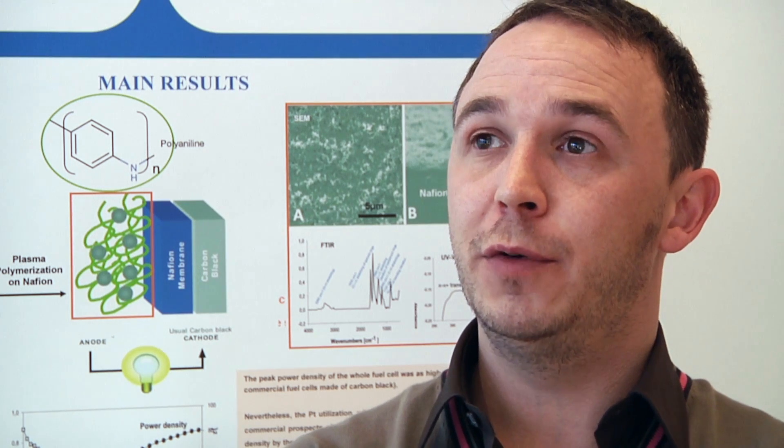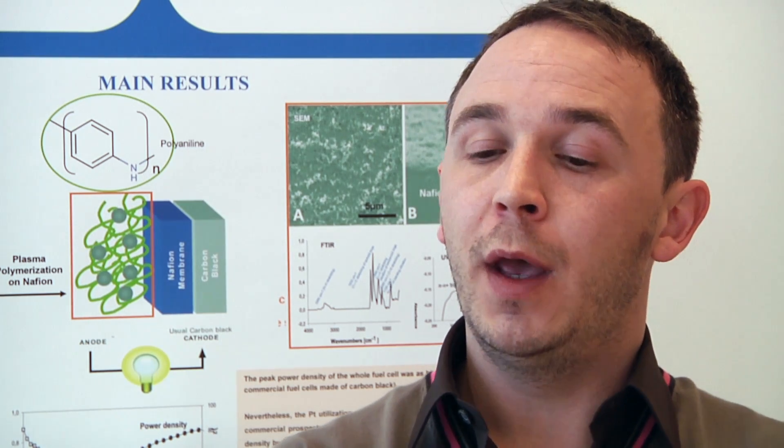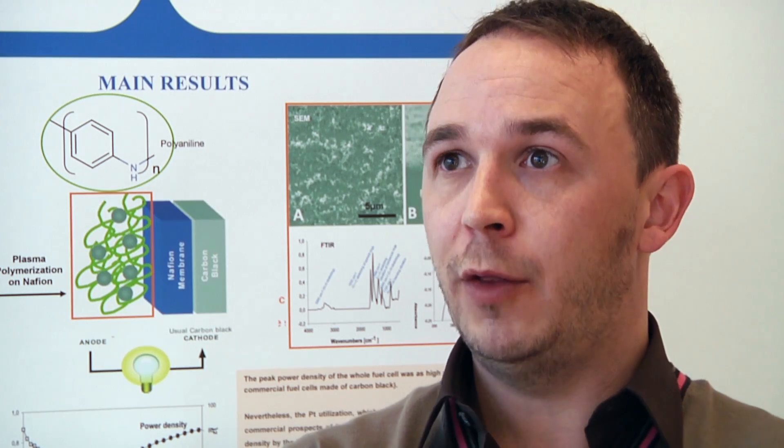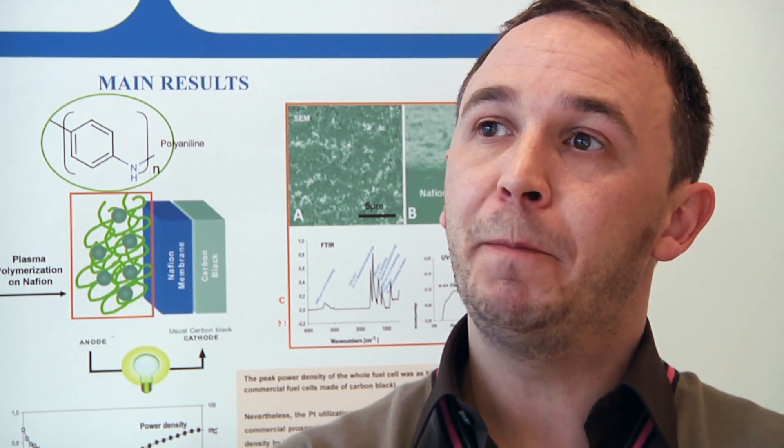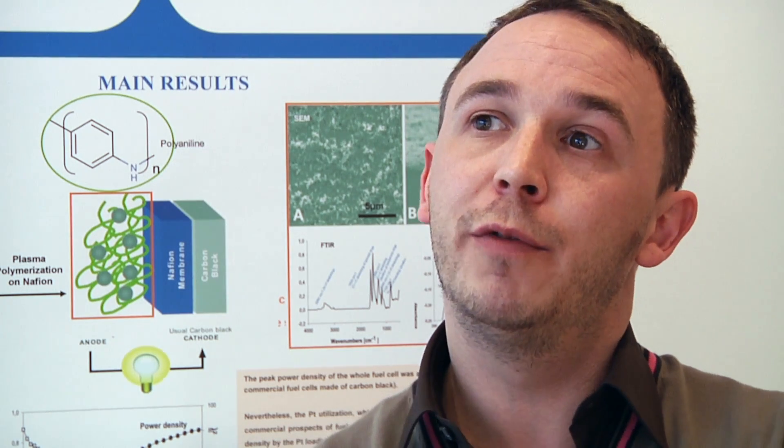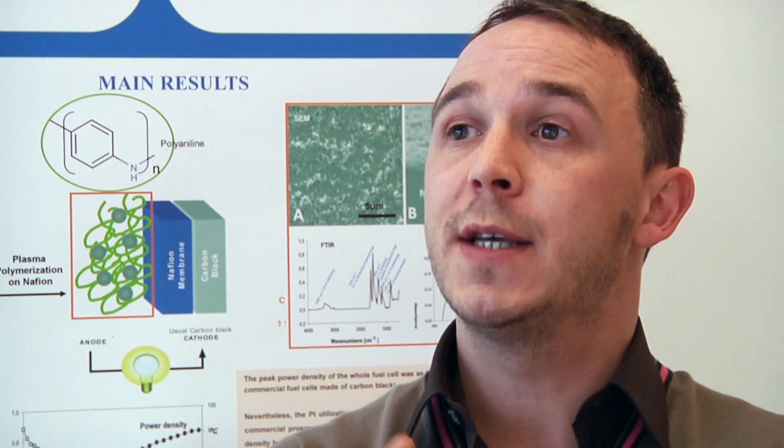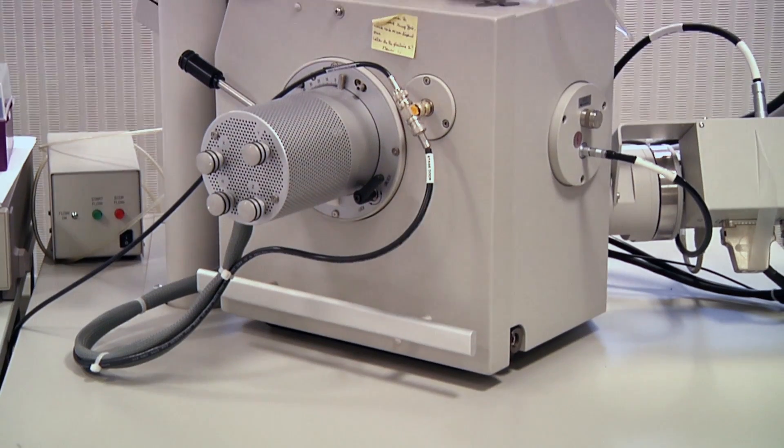Eine große Limitation der Brennstoffzellen ist der Kohlenstoff, den man benutzt um die Elektroden zu designieren. Normalerweise benutzt man Kohlenstoff und der Kohlenstoff degradiert ziemlich schnell. Außerdem ist die Kontrolle über die Architektur der Elektroden limitiert, was ein Exzess von Platinum verursacht, was ziemlich kostbar ist.